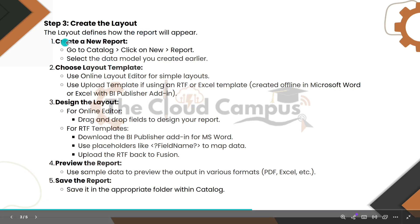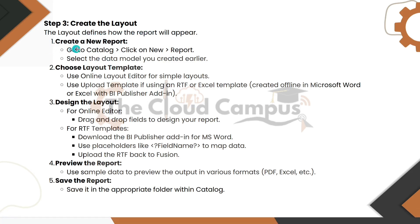Step three: create the layout. The layout defines how the report will appear. Create a new report — go to catalog, click on new report, and select the data model you created earlier. Based on the data model, the report will be shown. Choose a layout template: you can use the online template layout editor for simple layouts, or you can design the layout offline using Microsoft Word or Excel with the BI Publisher add-in.